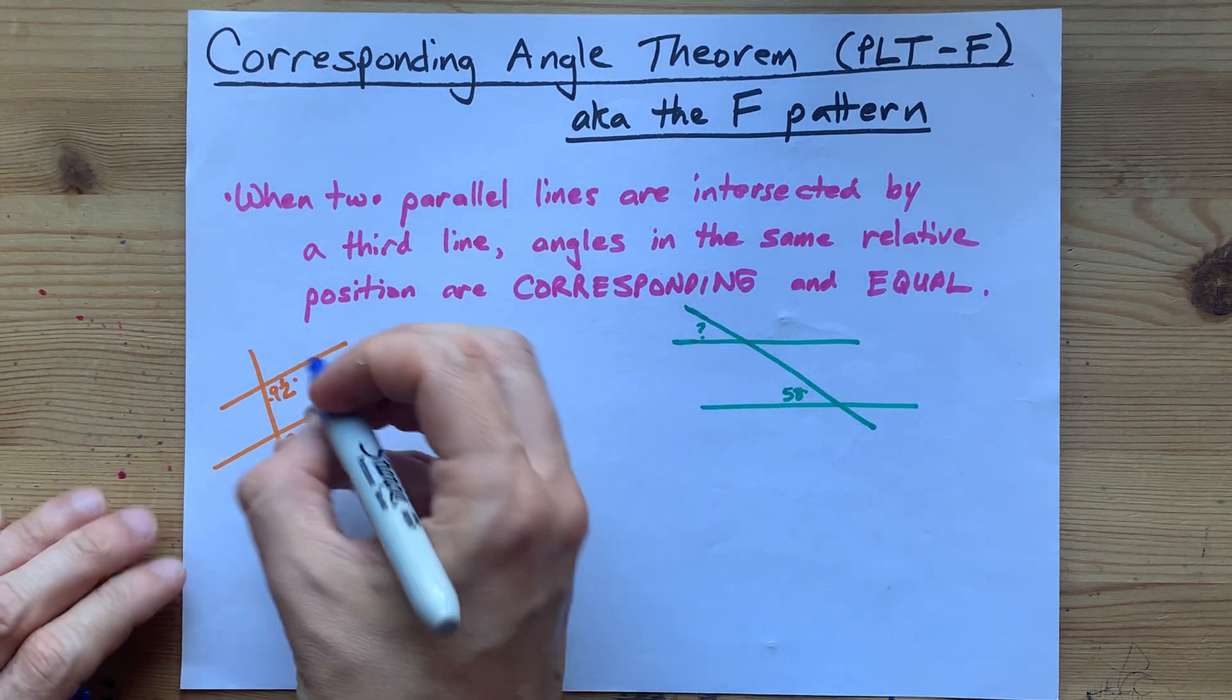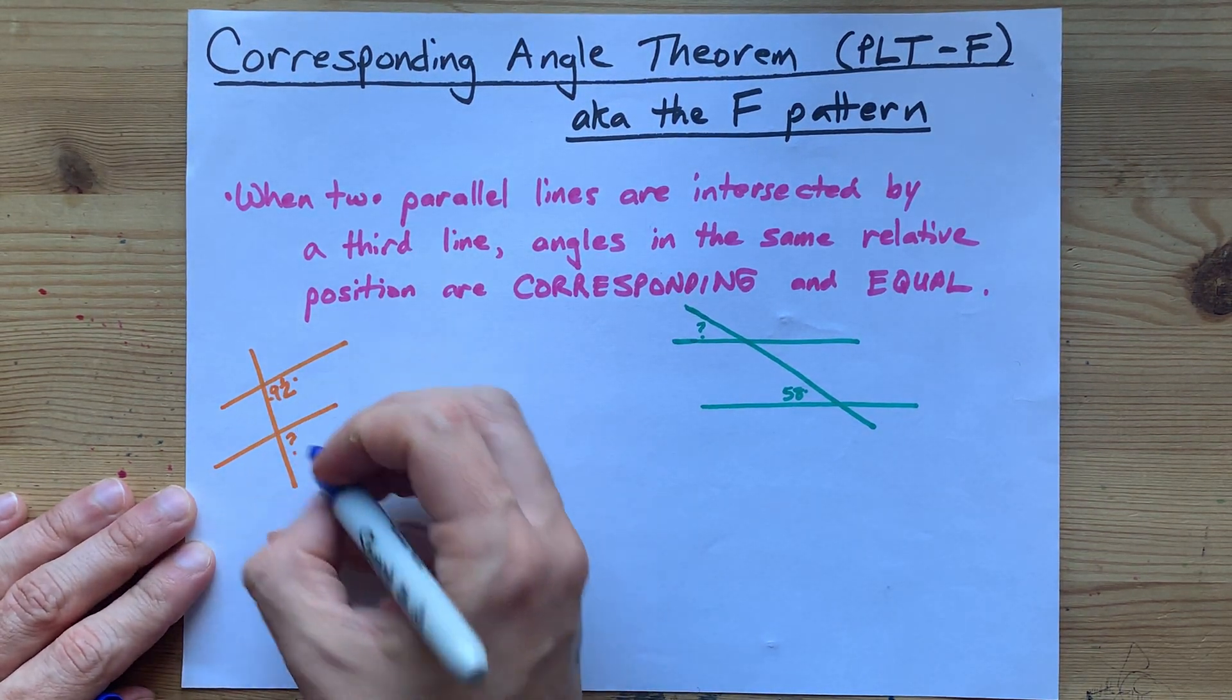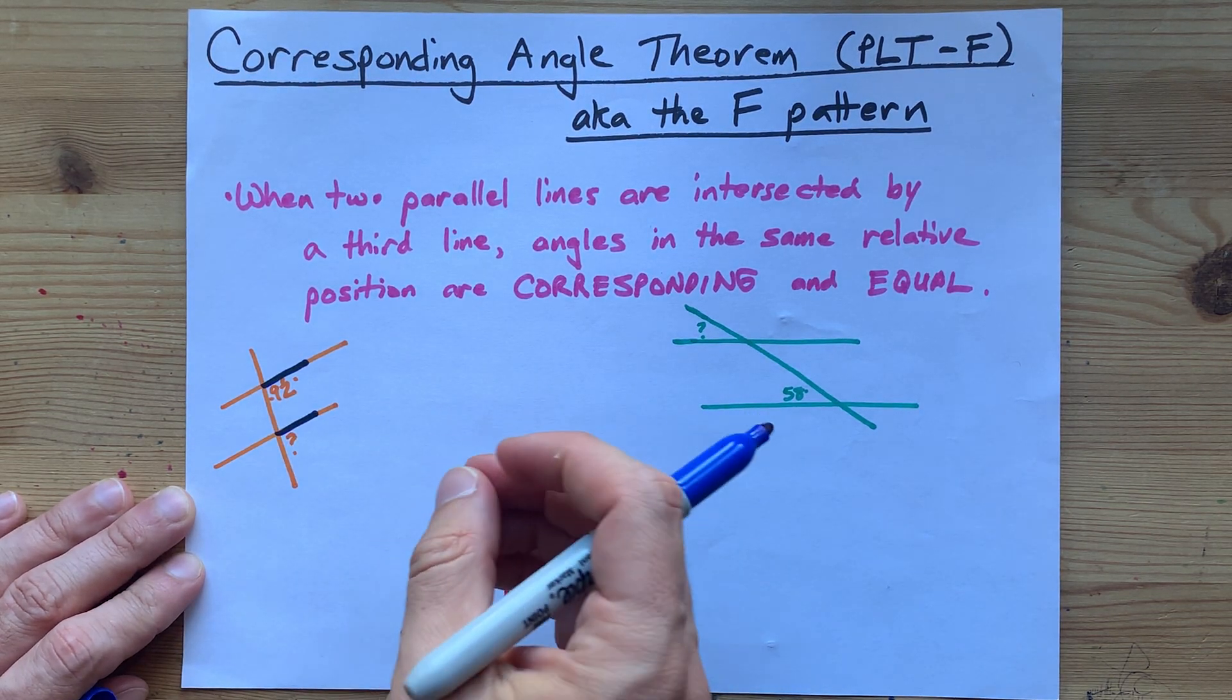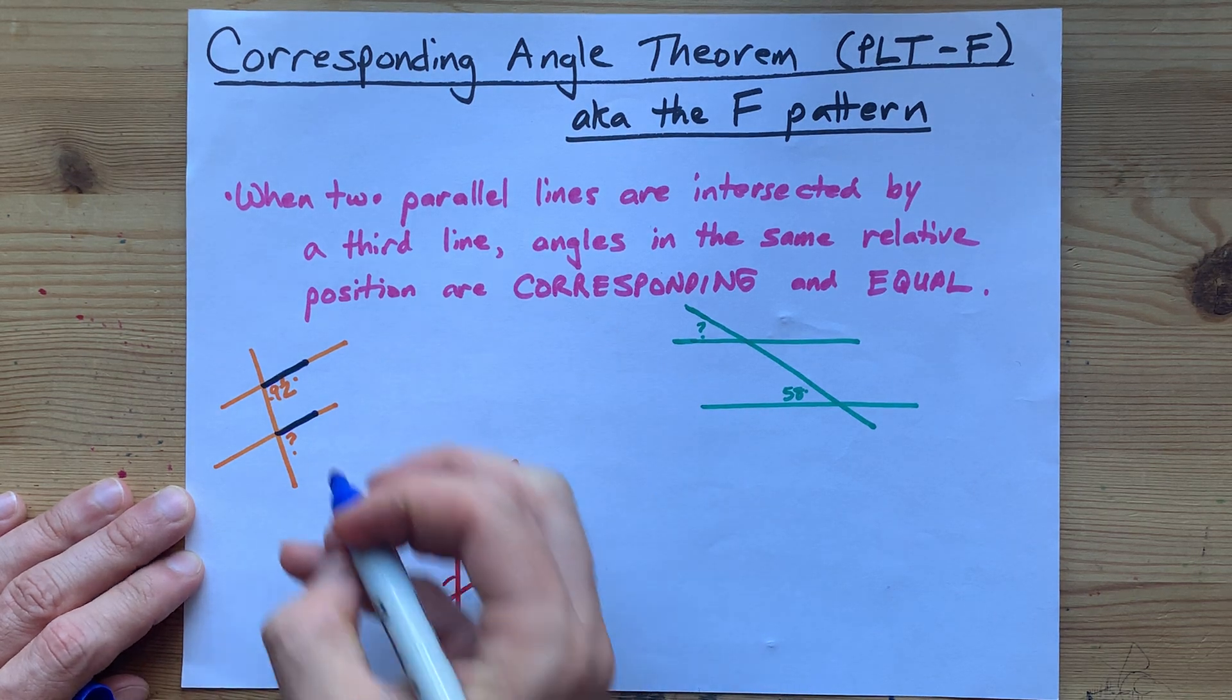So, find yourself those two parallel lines, one, two, and then use the transversal to create an F pattern of some kind.